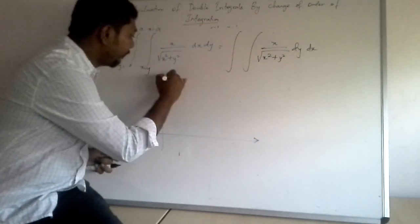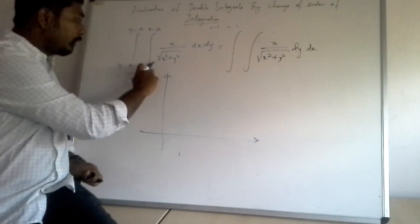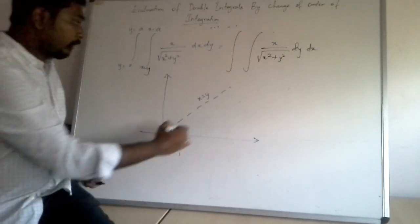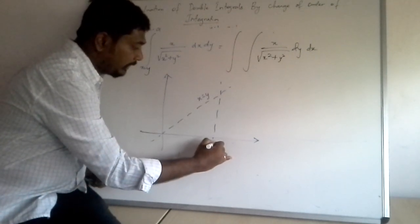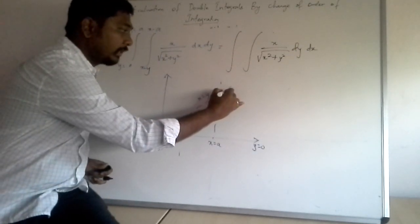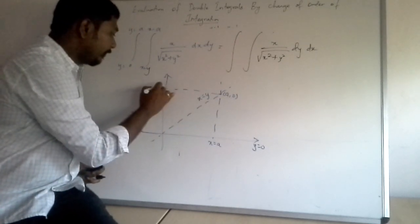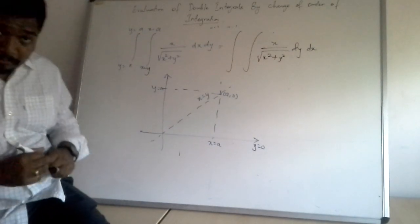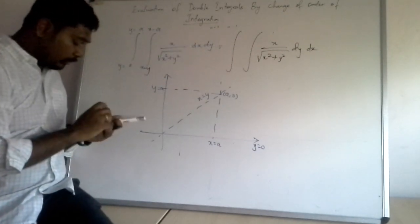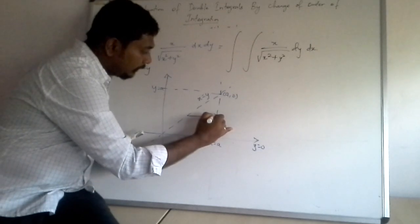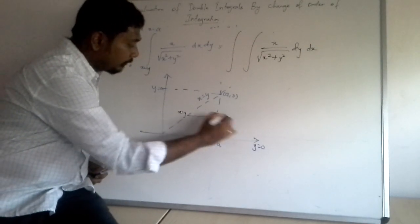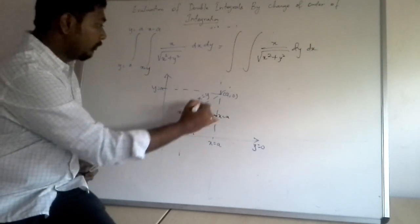Once we plot the graph it will become very easy. We have x = a as a vertical line, y = 0 as the x-axis, and x = y is a line through the origin, so the corner point is (a, a). That gives y = a as the upper horizontal boundary. Because the integral is with respect to dx, draw a line parallel to the x-axis from x = y to x = a, with y going from 0 to a.